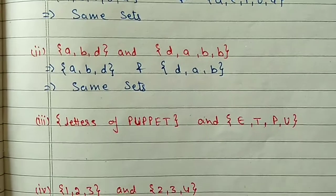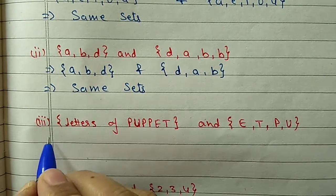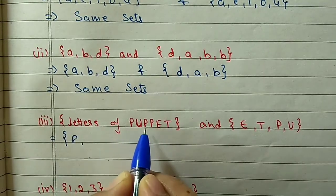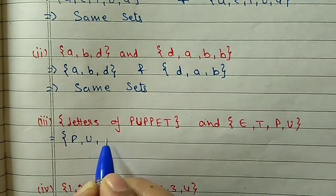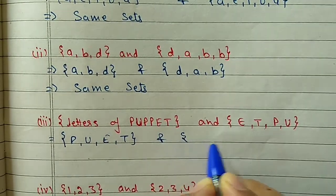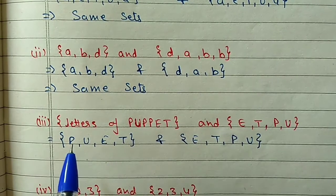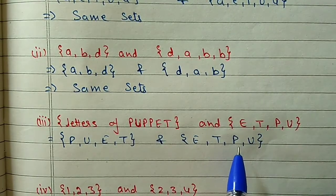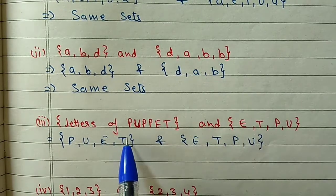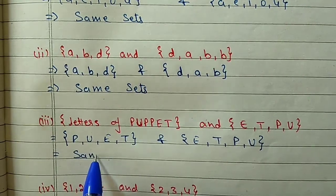Part (iii): The first set is 'letters of the word puppet'. Writing in roster form: P, U, E, T (ignoring repeated P and repeated letters). The second set is {E, T, P, U}. Comparing - P is in both, U is in both, E is in both, T is in both. So these two sets are also the same set - equal.